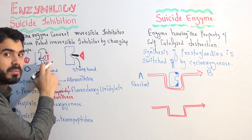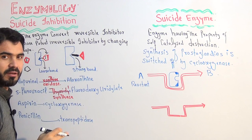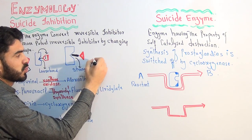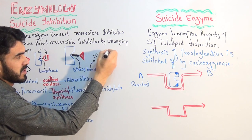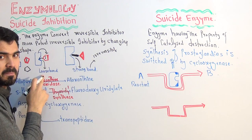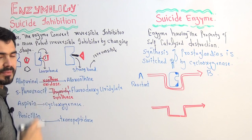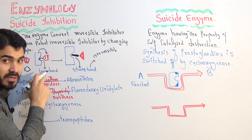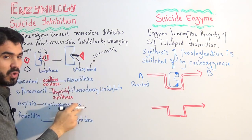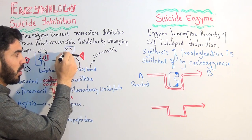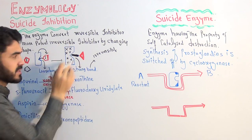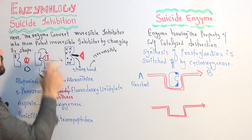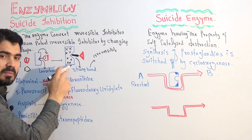At the initial stage, a strong covalent bond could not be formed, but once the shape is changed, a strong covalent bond becomes possible. If an inhibitor makes a strong covalent bond, this process is called irreversible. In the beginning it was reversible, but after formation of the strong covalent bond it becomes irreversible. Now this enzyme is permanently blocked — its shape is intact, but it is permanently blocked. This phenomenon is called suicide inhibition, meaning the enzyme itself did suicide by inhibiting itself.